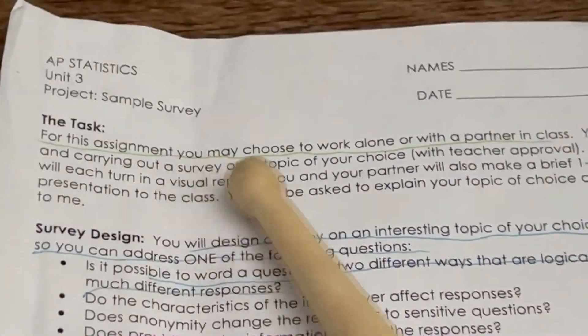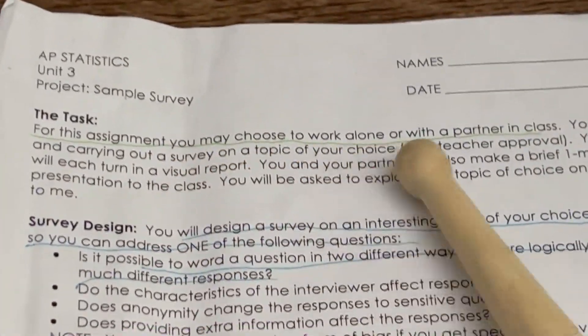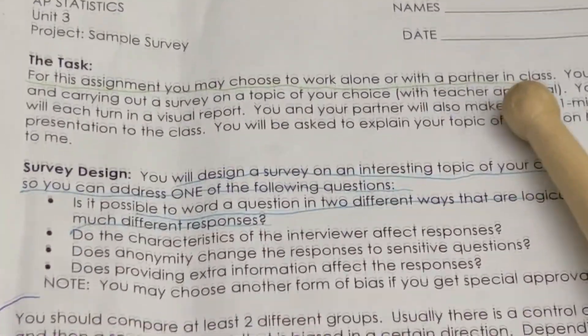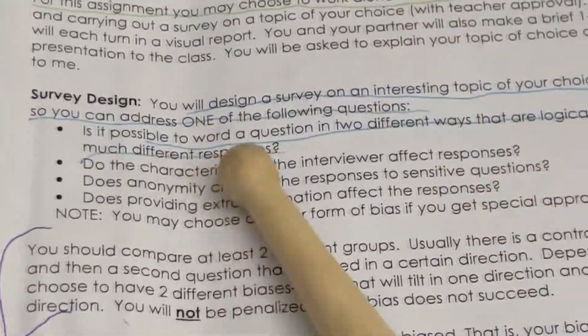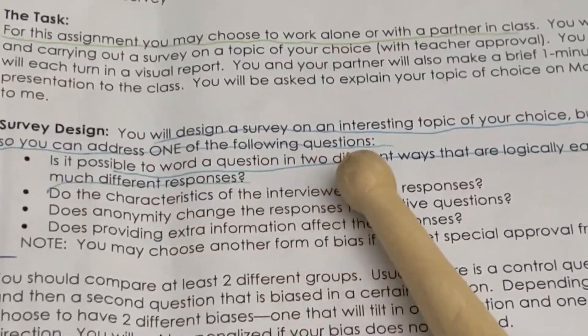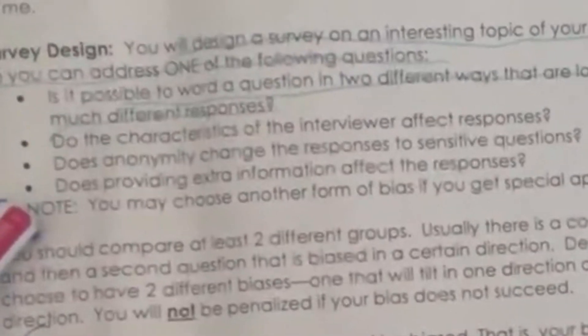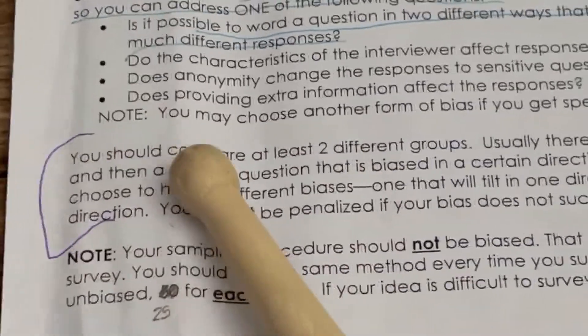For this assignment, you may choose to work alone or with a partner in class. You will design a survey on an interesting topic of your choice, but you must design it so you can address the following question: Does providing extra information affect the responses? You should compare at least two different groups.